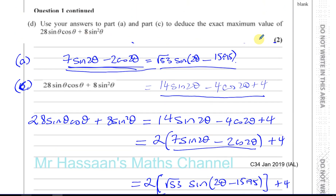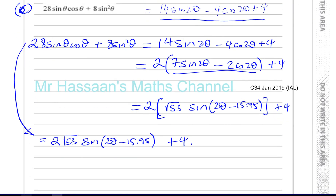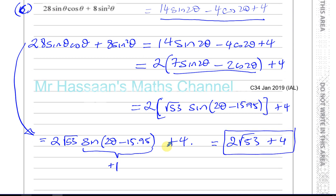We need the exact maximum value. The maximum value of sine(2θ minus 15.95°) is plus 1. So the maximum is 2 root 53 times 1 plus 4, which equals 2 root 53 plus 4. This is the exact maximum value of the expression. The minimum would use sine equal to minus 1, but for the maximum we get 2 root 53 plus 4. That's the answer to part D.